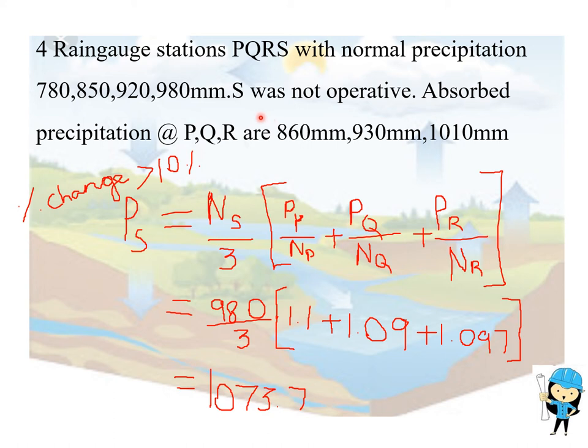One is arithmetic mean method and another is normal ratio method. If the change in rainfall percentage is less than 10%, we use the arithmetic mean method. Here the change in percentage, that is 980 minus 780 divided by 980 times 100, is greater than 10%, so we use the normal ratio method.